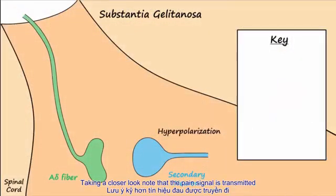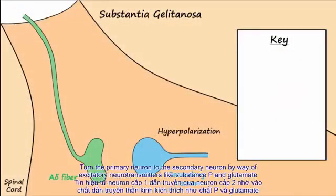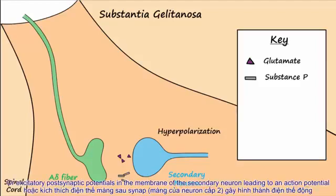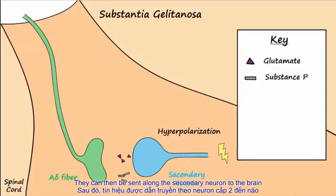Taking a closer look, note that the pain signal is transmitted from the primary neuron to the secondary neuron by way of excitatory neurotransmitters, like substance P and glutamate, being released from the primary neuron to bind to receptors on the secondary neuron, causing EPSPs, or excitatory post-synaptic potentials in the membrane of the secondary neuron.